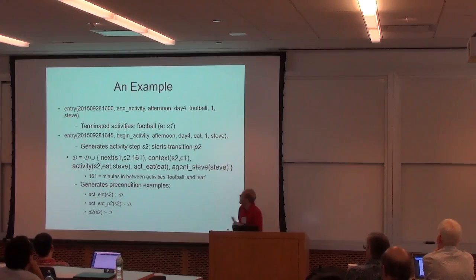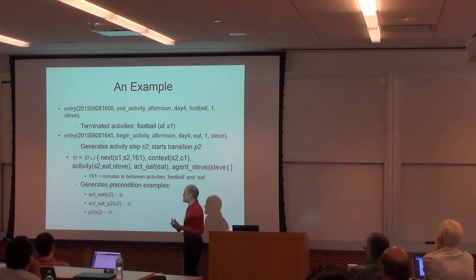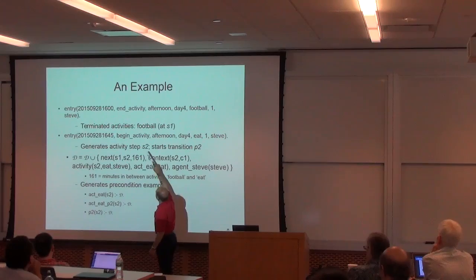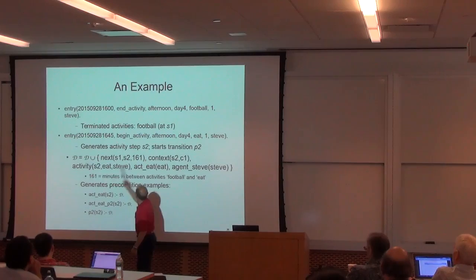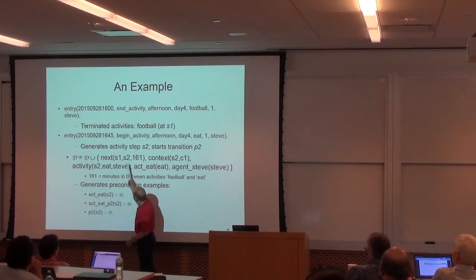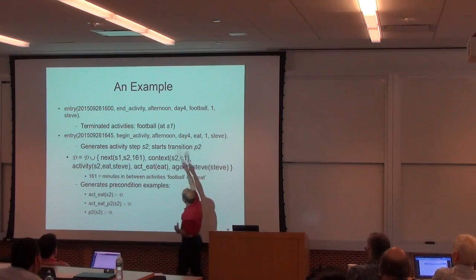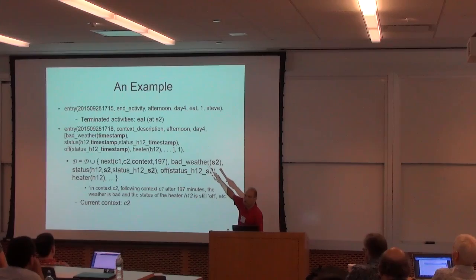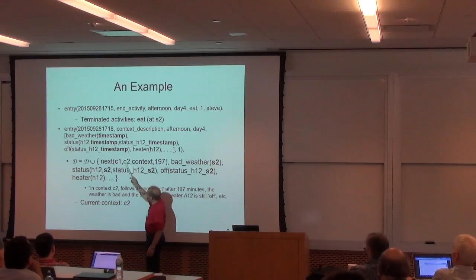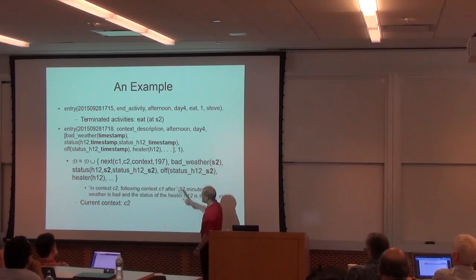When the activity ends, we don't extend the description. Then another activity starts, which is H1, it takes step S2, which comes after S1 and is still in context C1. S2 is associated to action eat, carried out by steel, and comes 161 minutes after activity S1, which was football. Again, this causes the generation of three examples. Here another context is described, so we generate the context step C2. We say that this context comes after C1, after 197 minutes. From now on, all future activities will be associated to context C2.